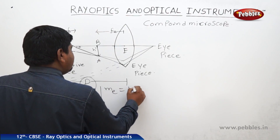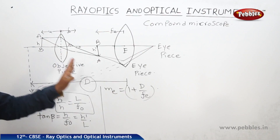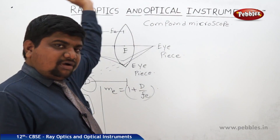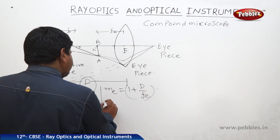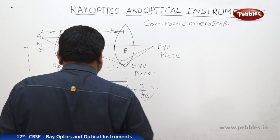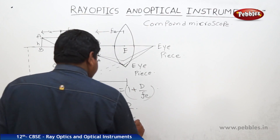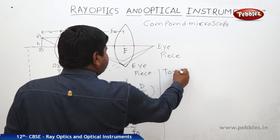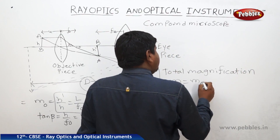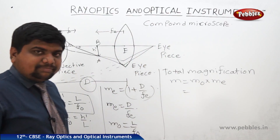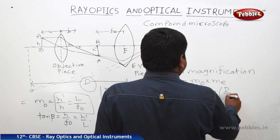The magnification of the eyepiece is 1 + D/FE — we know this. If the position of the object is at infinity, the image forms at F, and vice versa — these are reciprocals of each other. In that case, if the image is at infinity, we can neglect the 1, so ME becomes D/FE. Therefore, M0, the magnification of the objective, is L/F0. The total magnification M equals M0 × ME, that is, objective magnification into eyepiece magnification.